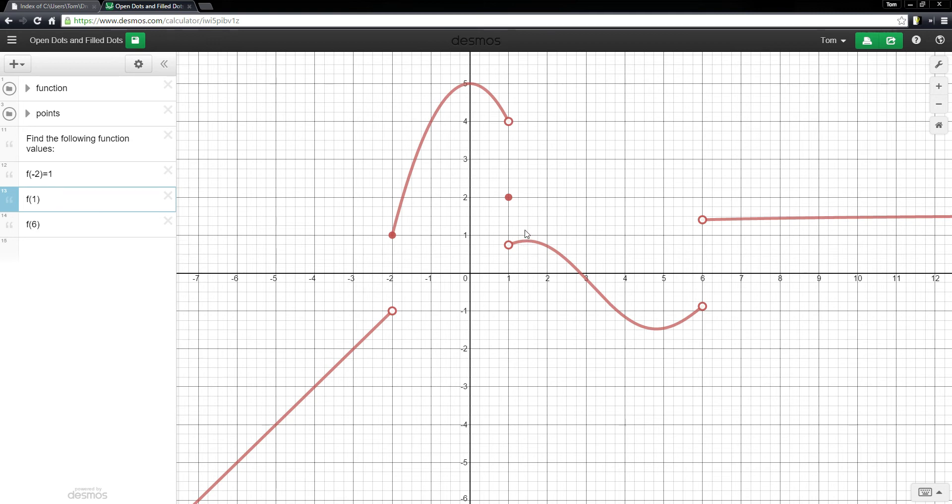Similar situation here at f of 1. I had these two disconnected pieces, but now you can see that there is an open dot here and here, and the filled dot right here in the middle. So, if I wanted to calculate the function value, f of 1, then what I would do is find where that filled dot is. And that filled dot tells me it's not at either of these endpoints right here. The filled dot is right here at 2.